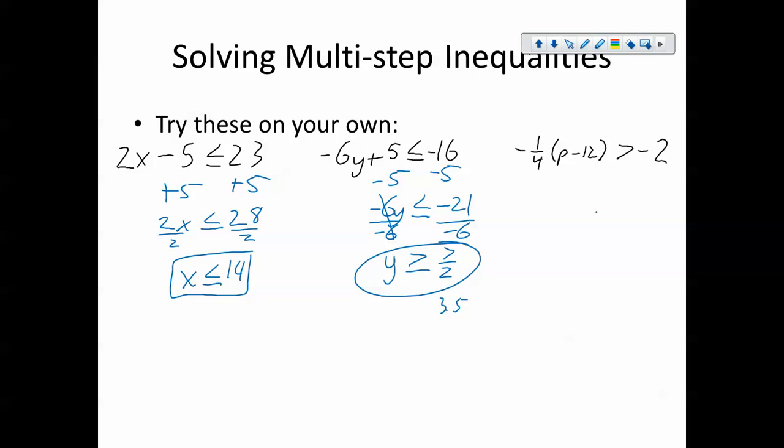The last one here, notice that the negative 1/4 is on the outside of these parentheses, queuing us to distribute. So the result we get is negative 1/4 times p plus negative 1/4 times negative 12, which is a positive 3, is greater than negative 2. Now, you will notice that this problem is just like the other two now. I'm going to subtract 3 from both sides, leaving me with negative 1/4 p is greater than negative 5.